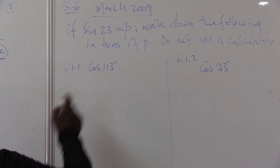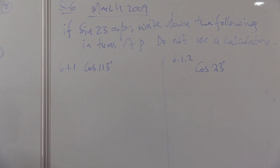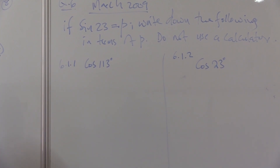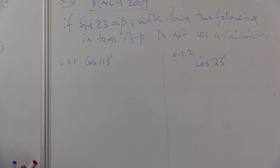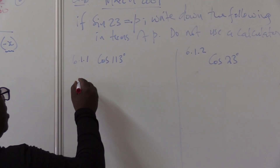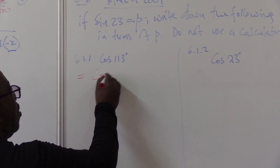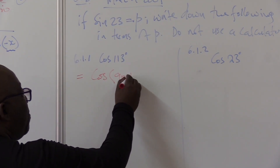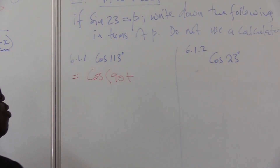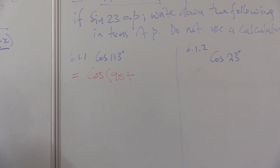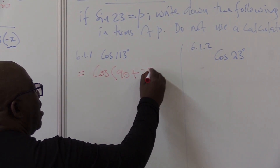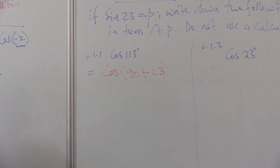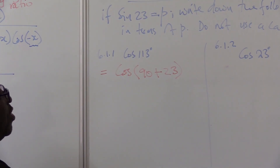I see here: cosine. How can I get sine from cosine? Of course, I've got to introduce 90. So this will be the same as cos(90 + ...). 90 plus what will give me 113? Of course, plus 23. Here comes 23.